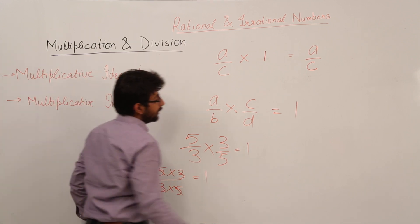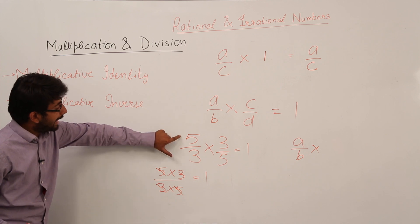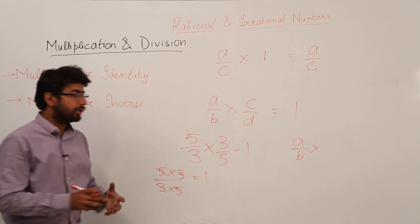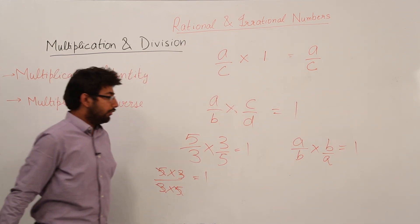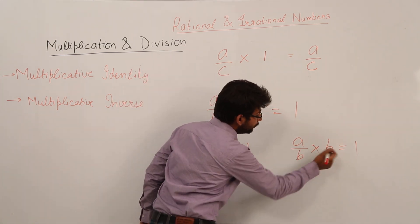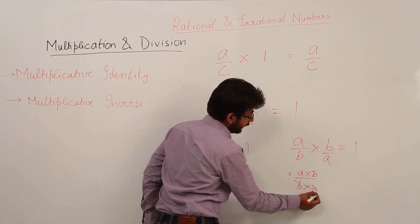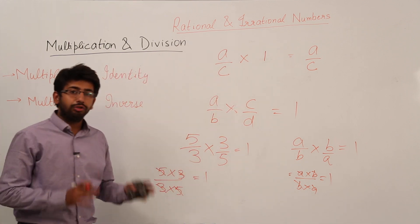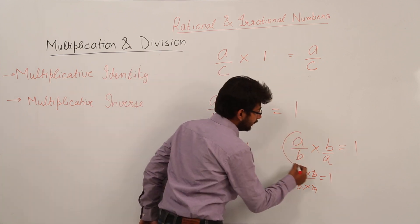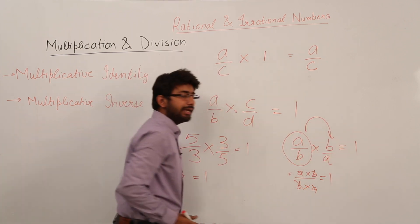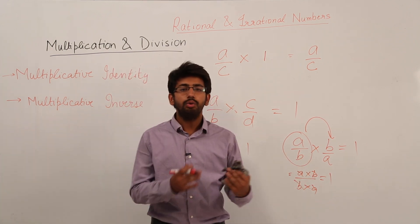That means if I multiply a/b with b/a, my answer will be equal to 1, because a/b × b/a equals a × b divided by b × a: the b's cancel out, the a's cancel out, and the answer is 1. So the multiplicative inverse of a/b is always equal to b/a, and the multiplicative inverse of b/a is always equal to a/b.